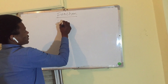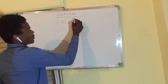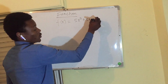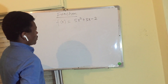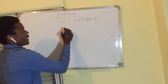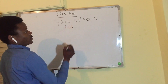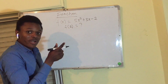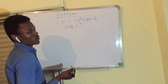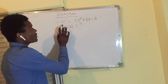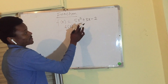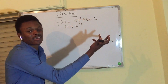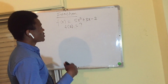For example, if we have a function f of x equals 5x squared plus 3x minus 2, and we are asked to find f of 2 — that means x is the input and f of x is the output. The output depends on the value of x.